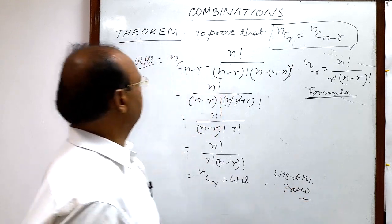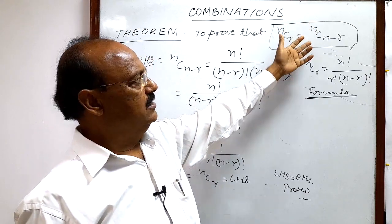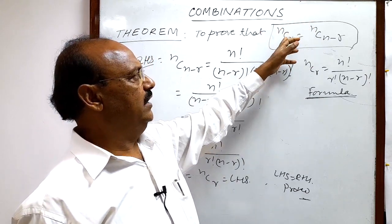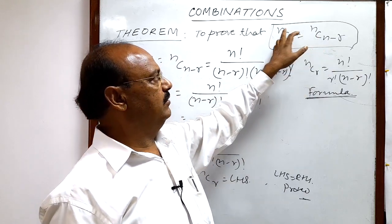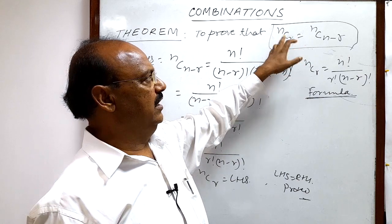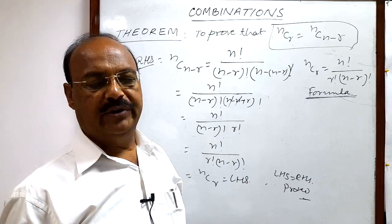So we can use this formula, or result you can say, nC(n minus r) is equal to nCr. Here in this suffix you see this is the difference of these two numbers n and r. So we will use it wherever required.